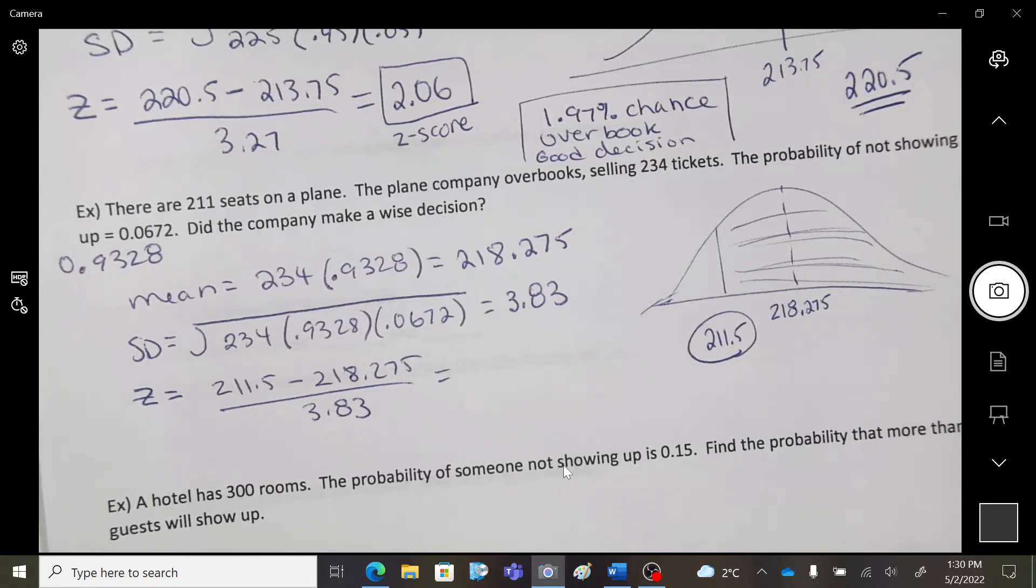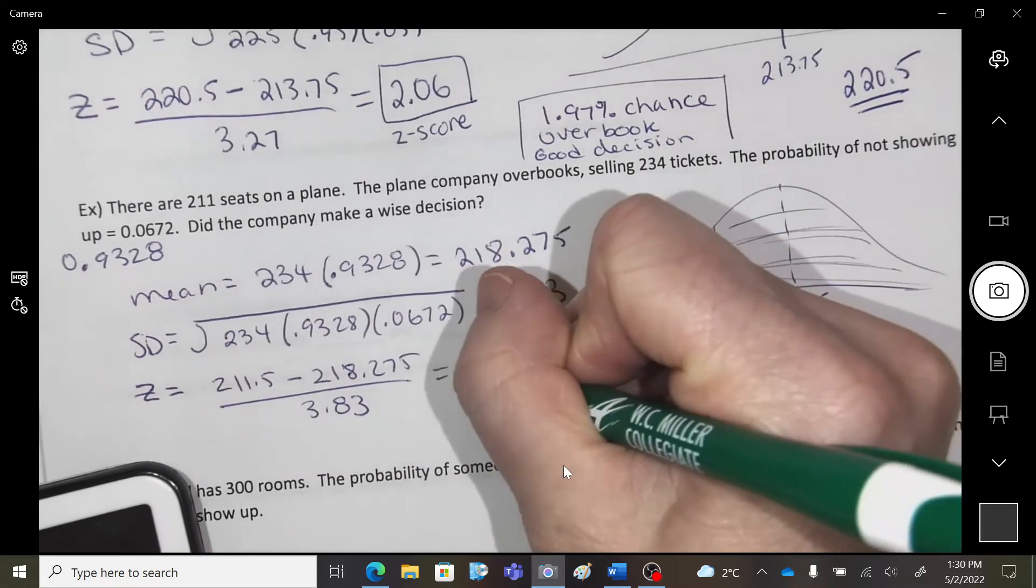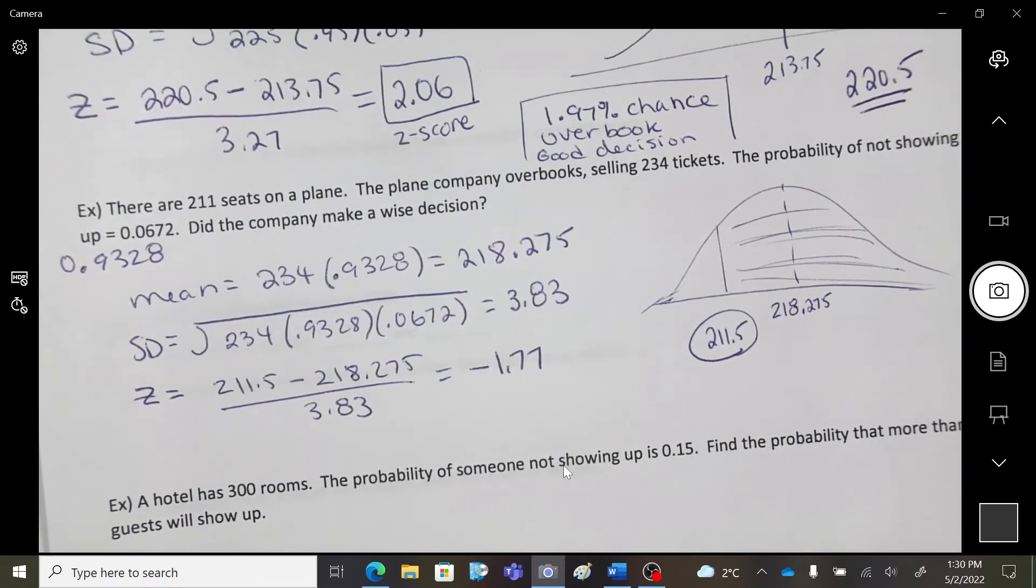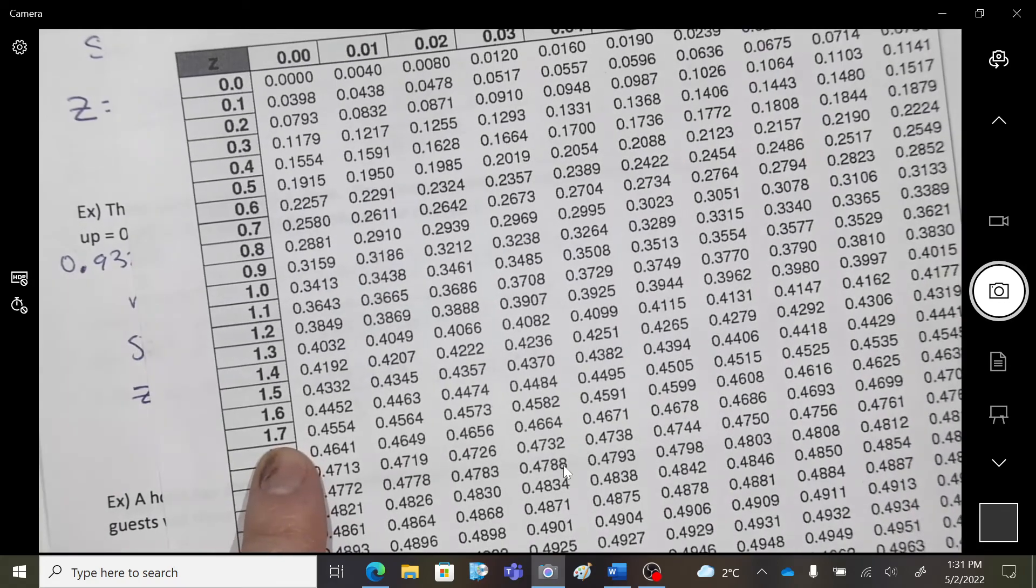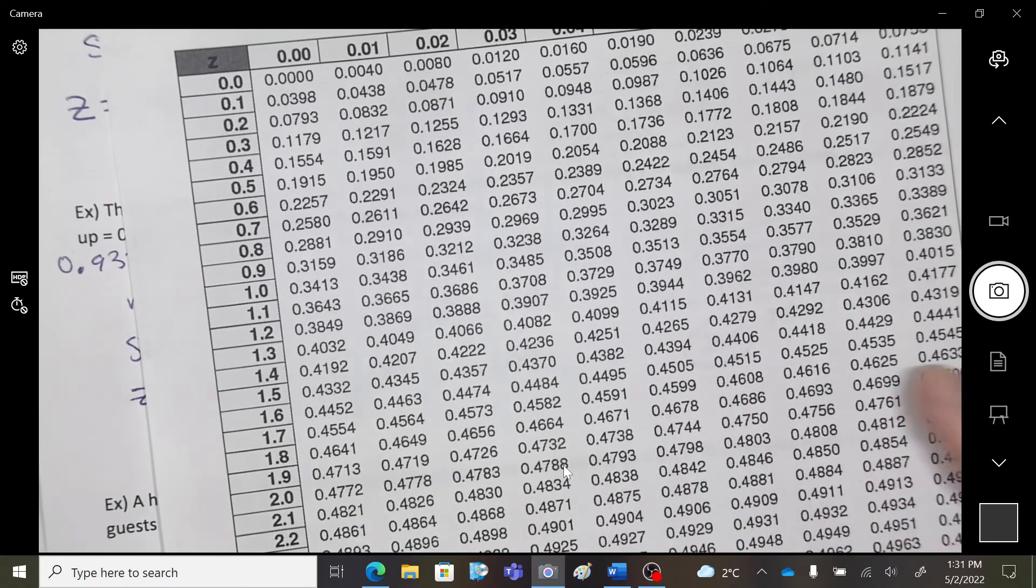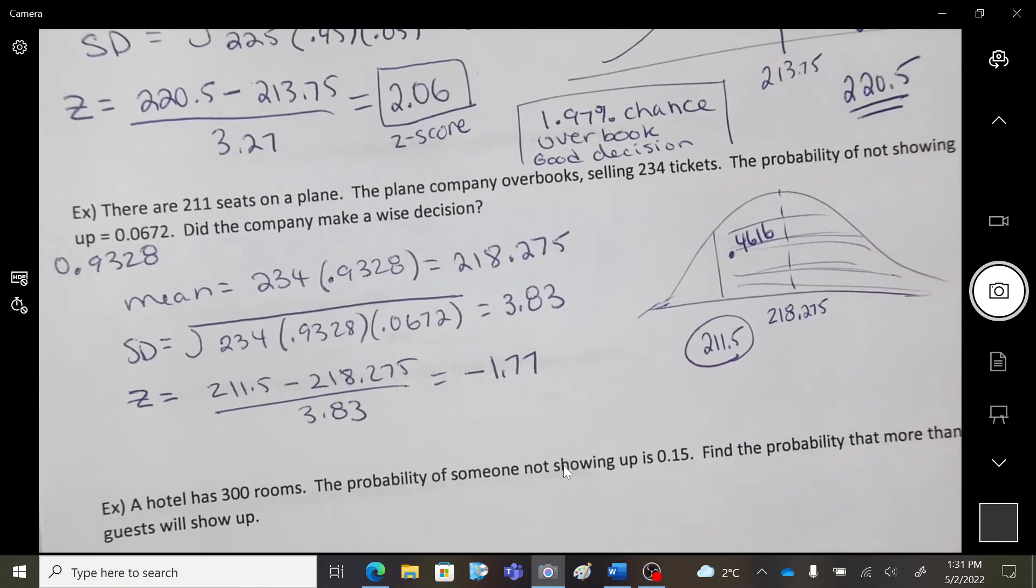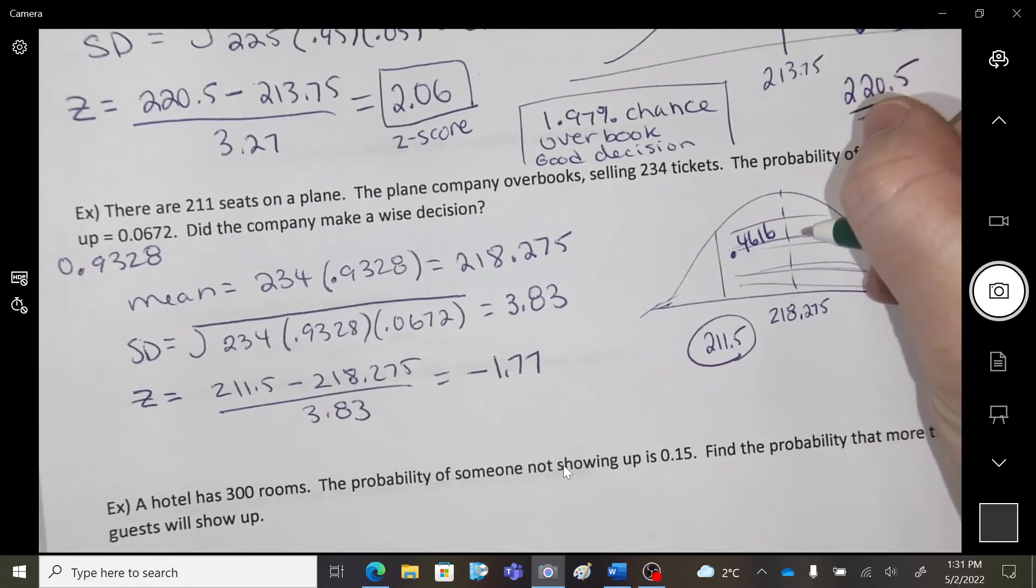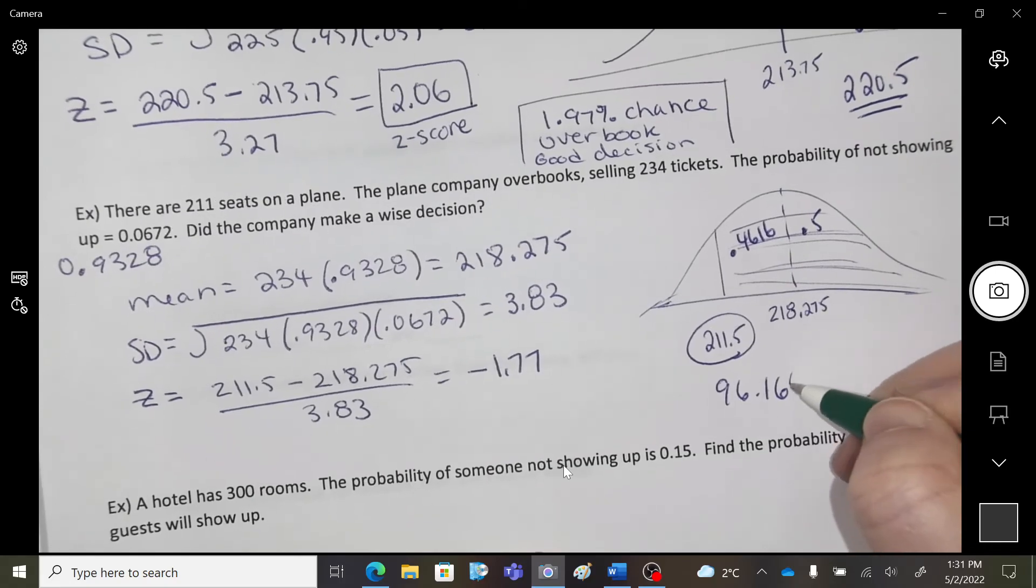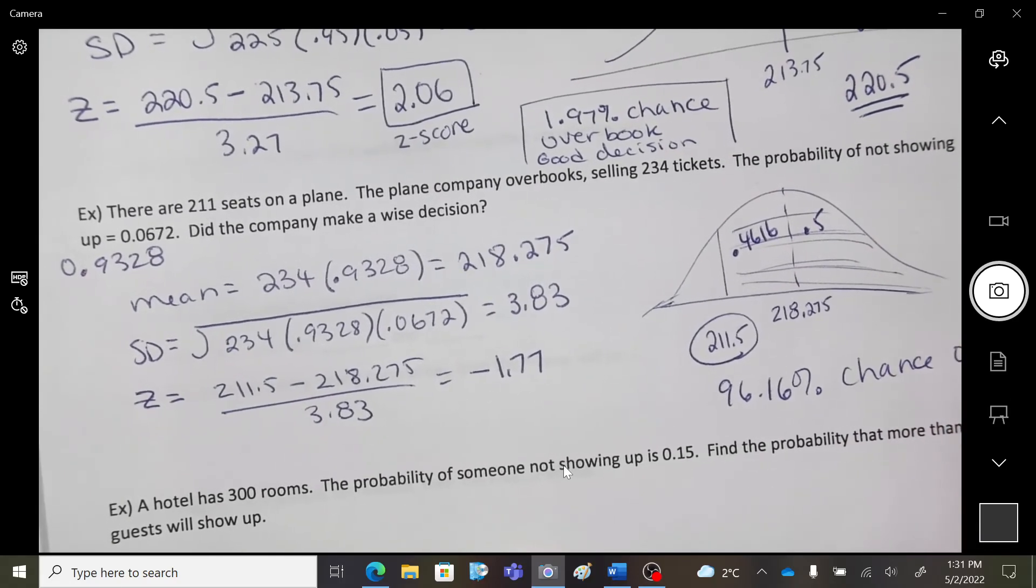Okay, I'm getting negative 1.77. Okay, 1.77. So, I'm getting a 0.4616 plus a 0.5. This is not good. There's a 96.16% chance of overbooking.